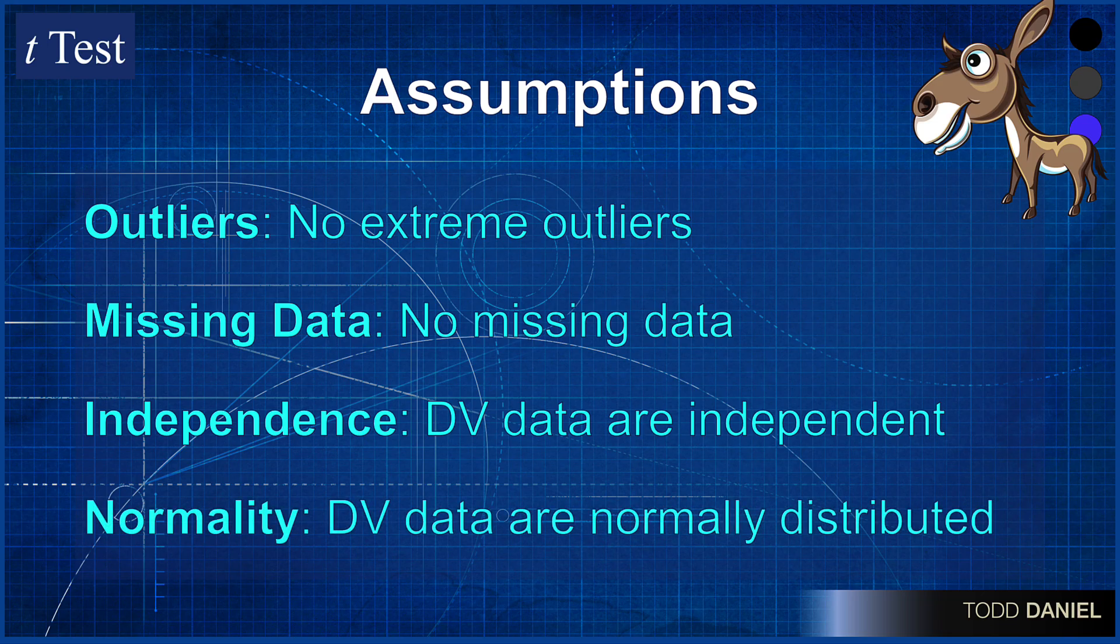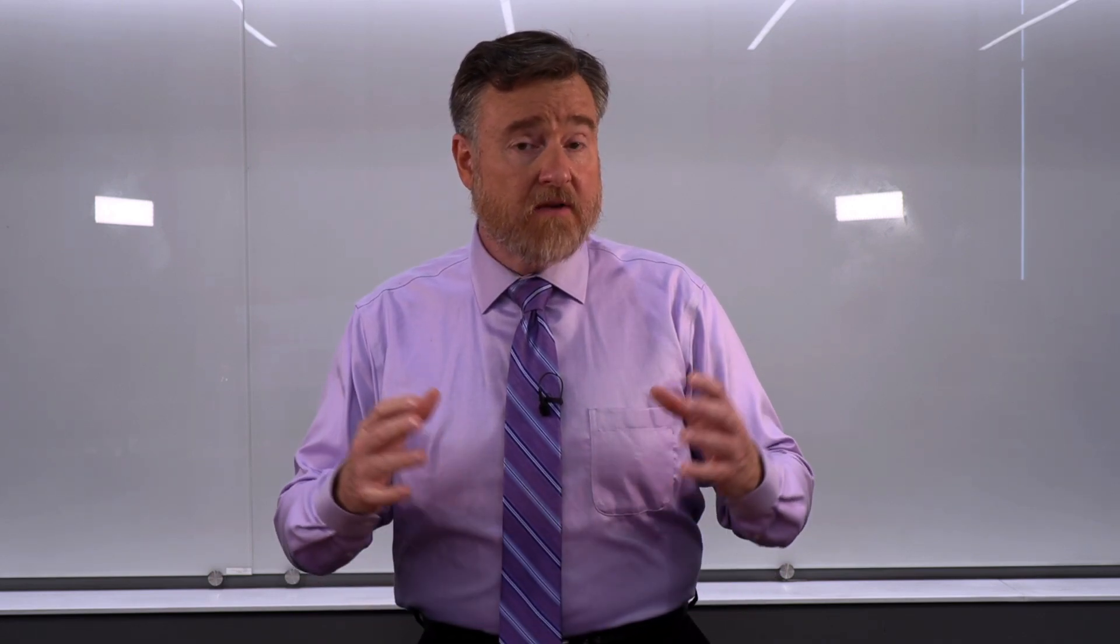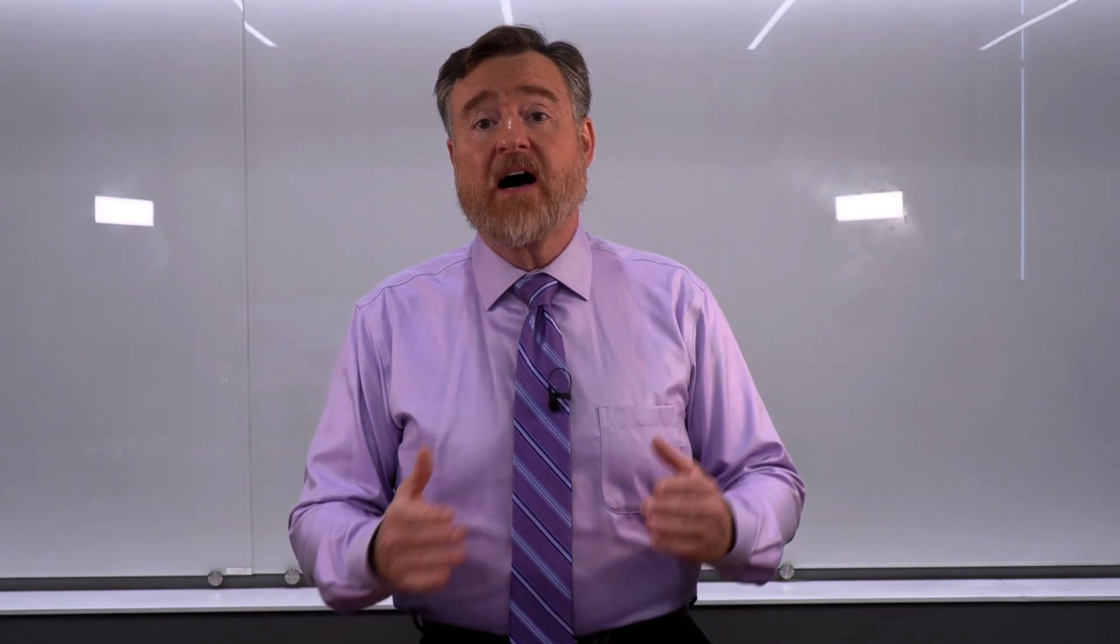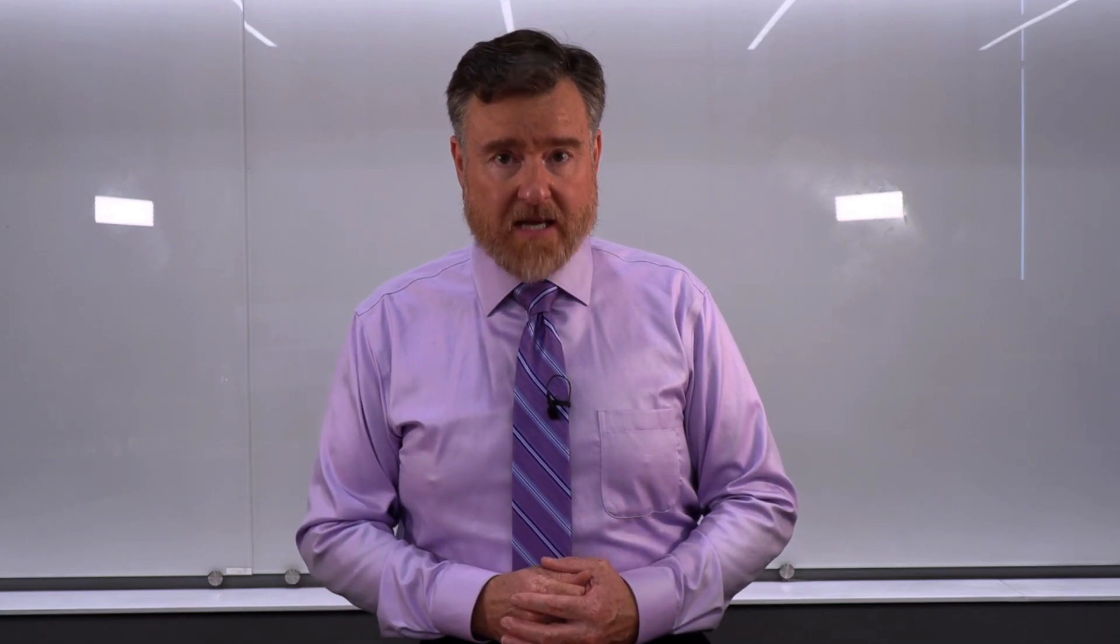And the fourth assumption, the dependent variable is normally distributed to meet the assumption of normality. If we test our dependent variable and it is not normally distributed, we need to make sure that we're using a large enough sample that we can satisfy the assumption of normality based upon the central limit theorem and our distribution of sample means.